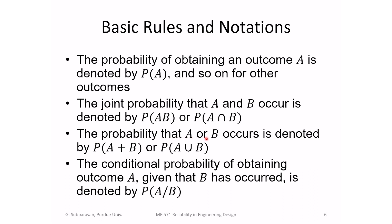These are basic notations. The conditional probability of obtaining outcome A, given that B has occurred, is denoted as P(A|B), to be read as 'probability of A given B.' That's called conditional probability — knowing that B has occurred, we ask what is the probability that A will occur.